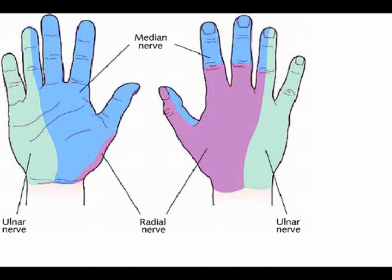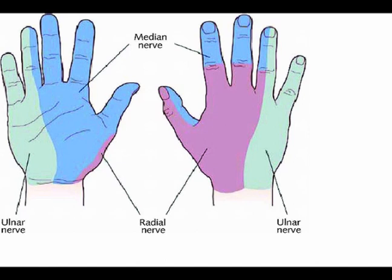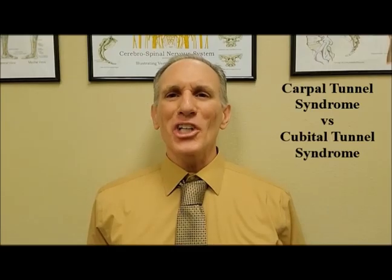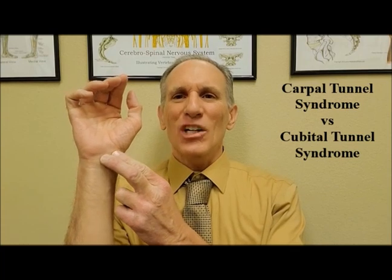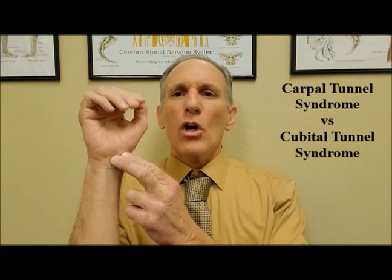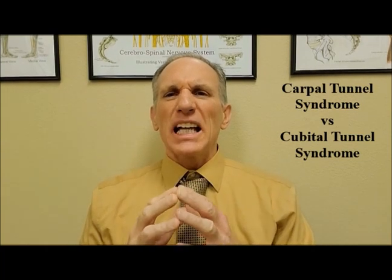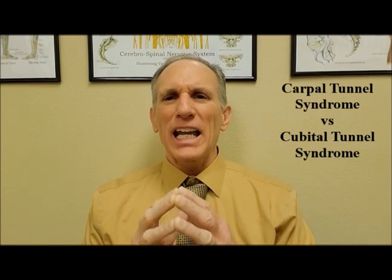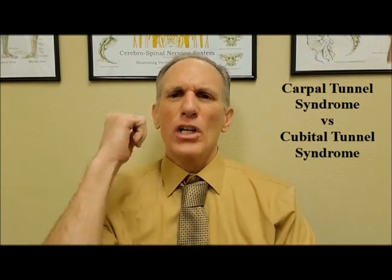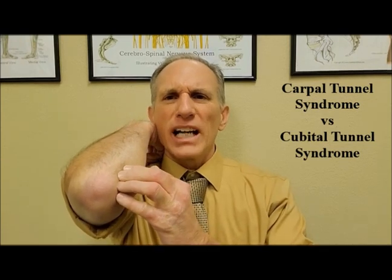Cubital tunnel syndrome is common in athletes who participate in baseball, bodybuilding, football, wrestling, cycling, and mountain biking. Carpal tunnel syndrome is impingement of the median nerve occurring in the carpal tunnel at the wrist, while cubital tunnel syndrome is compression or pressure — with many times a traction component — of the ulnar nerve at the elbow.